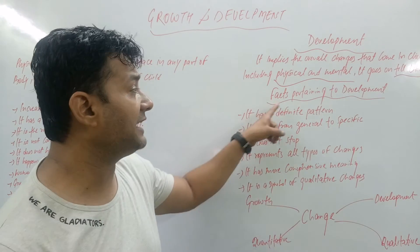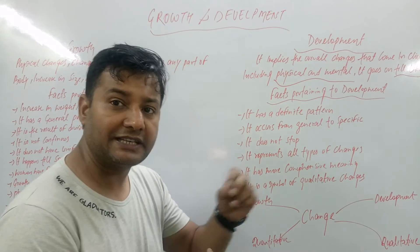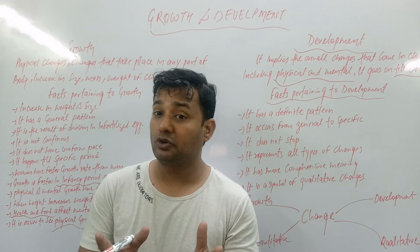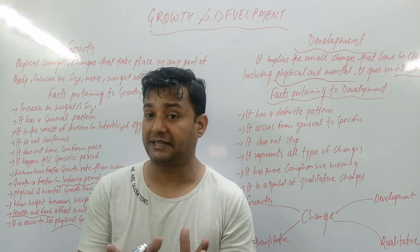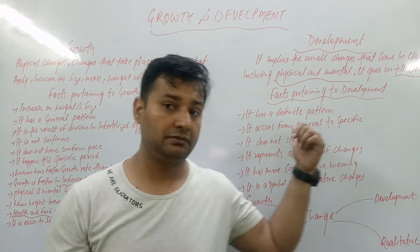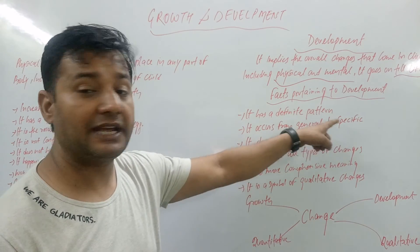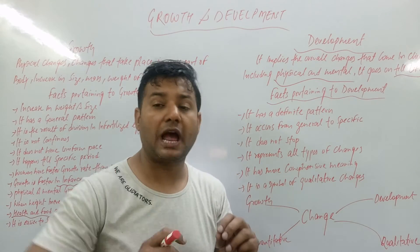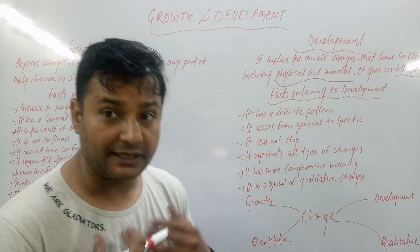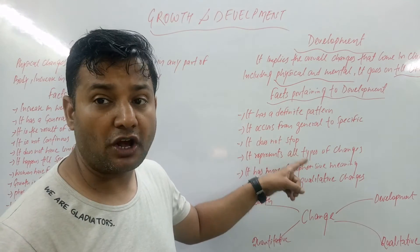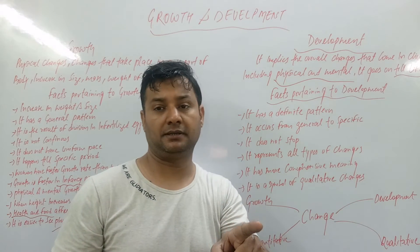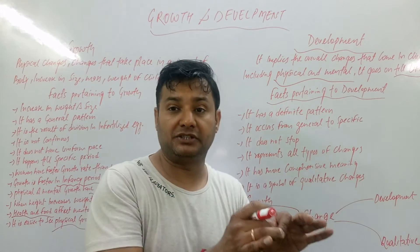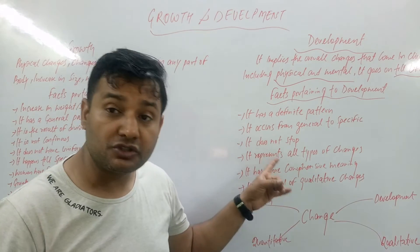Now, facts pertaining to development. Like growth, development has a definite pattern — we have a definite pattern of development. Second, it goes from general to specific — we have a specific progression. Third, it does not stop — it is a continuous process. In development we have no general stoppage; we have to go on.